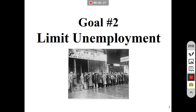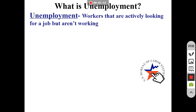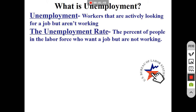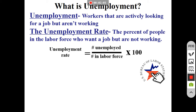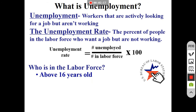Our second goal of macroeconomics is to limit unemployment. We've had highs and lows throughout our history. Unemployment is defined as workers that are actively looking for a job but aren't working. You have to be actively looking — once you've given up, you no longer fit the criteria. The unemployment rate is the percentage of people in the labor force who want a job but are not working. The formula is: number unemployed divided by number in the labor force, times 100.